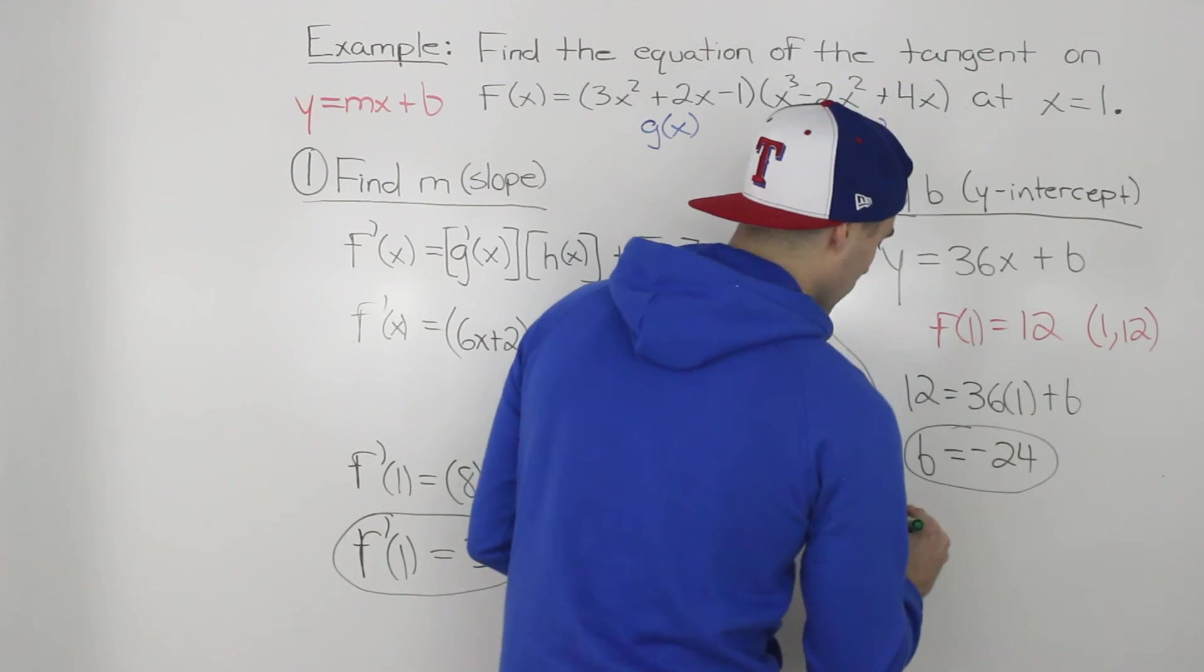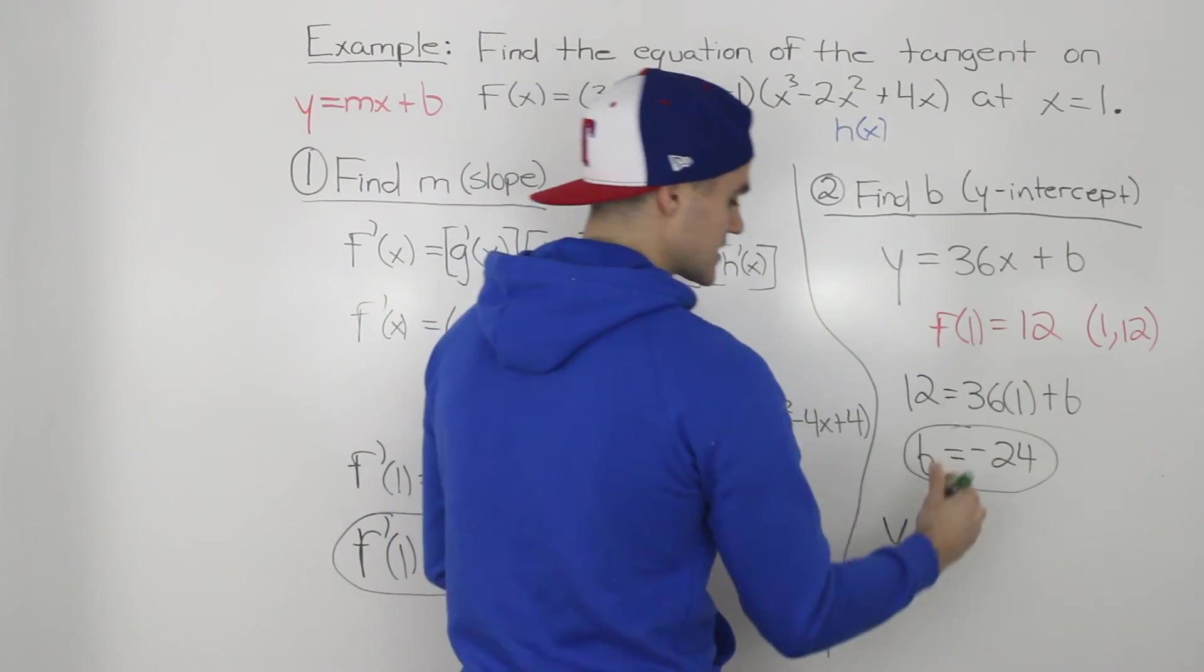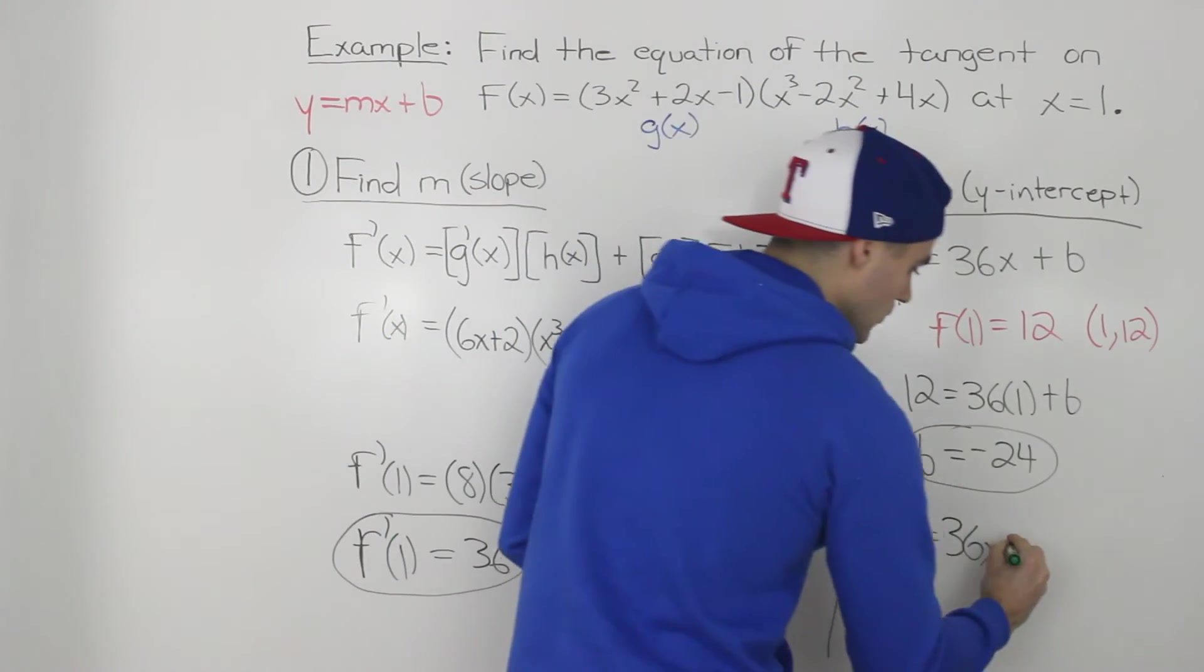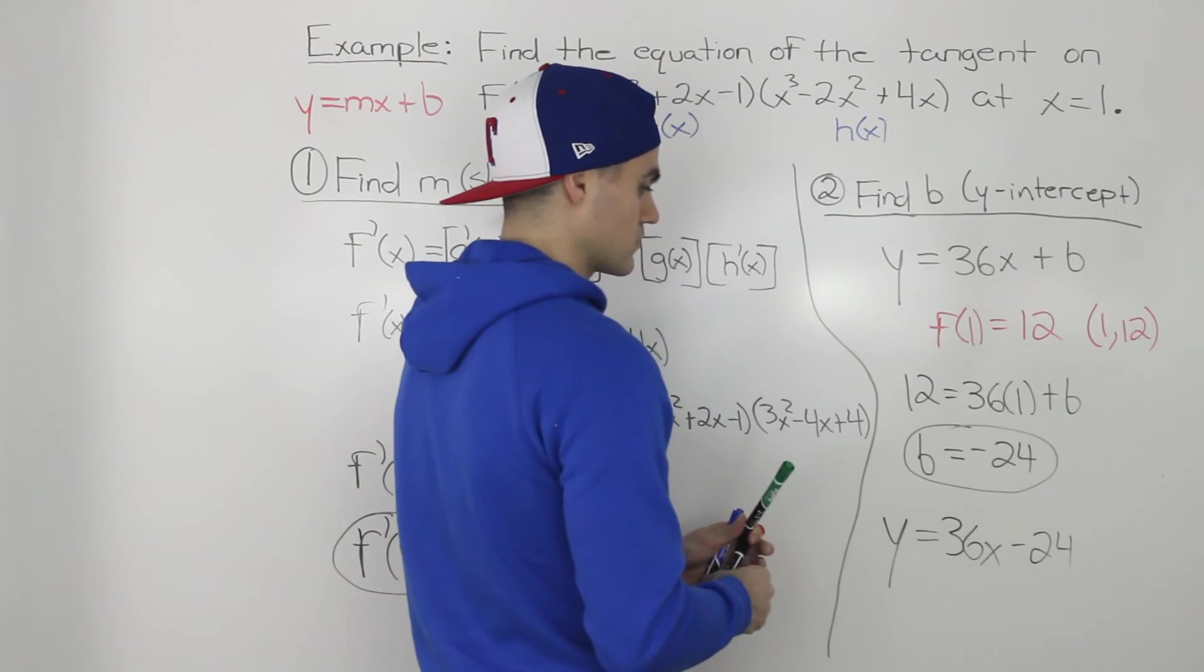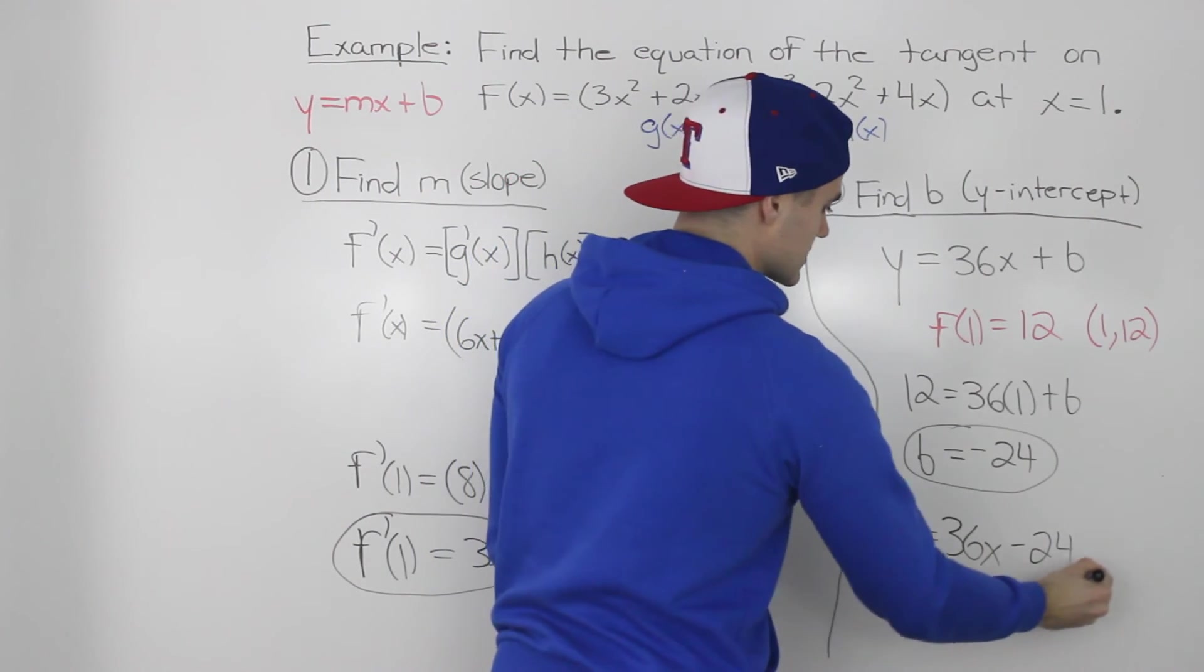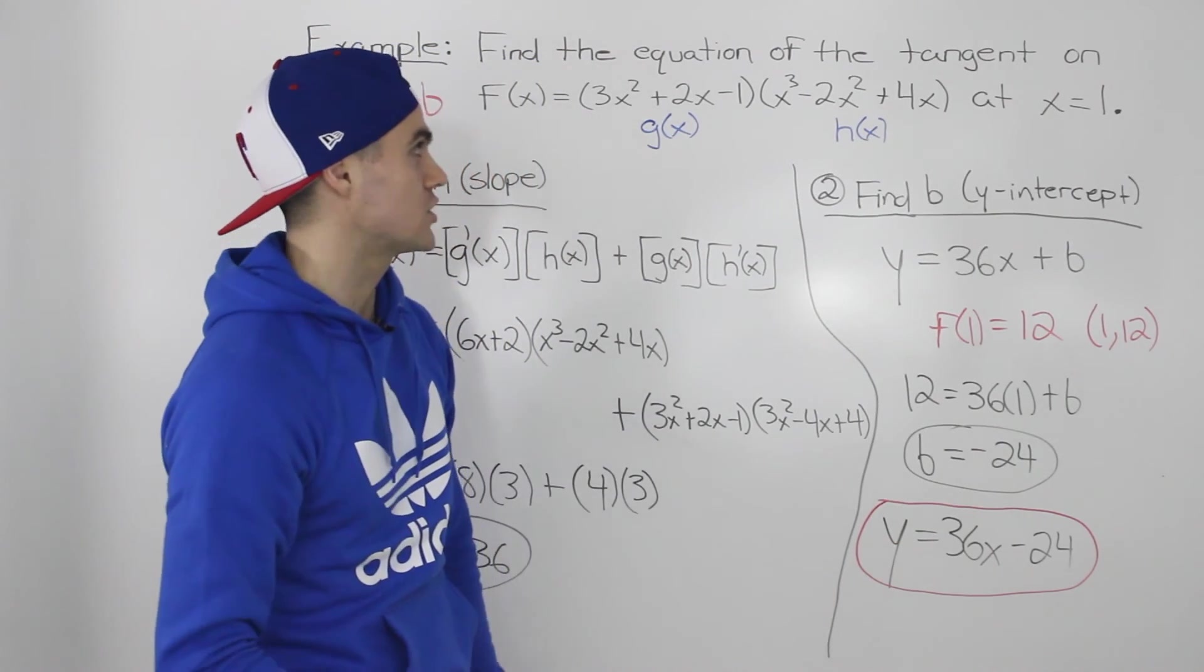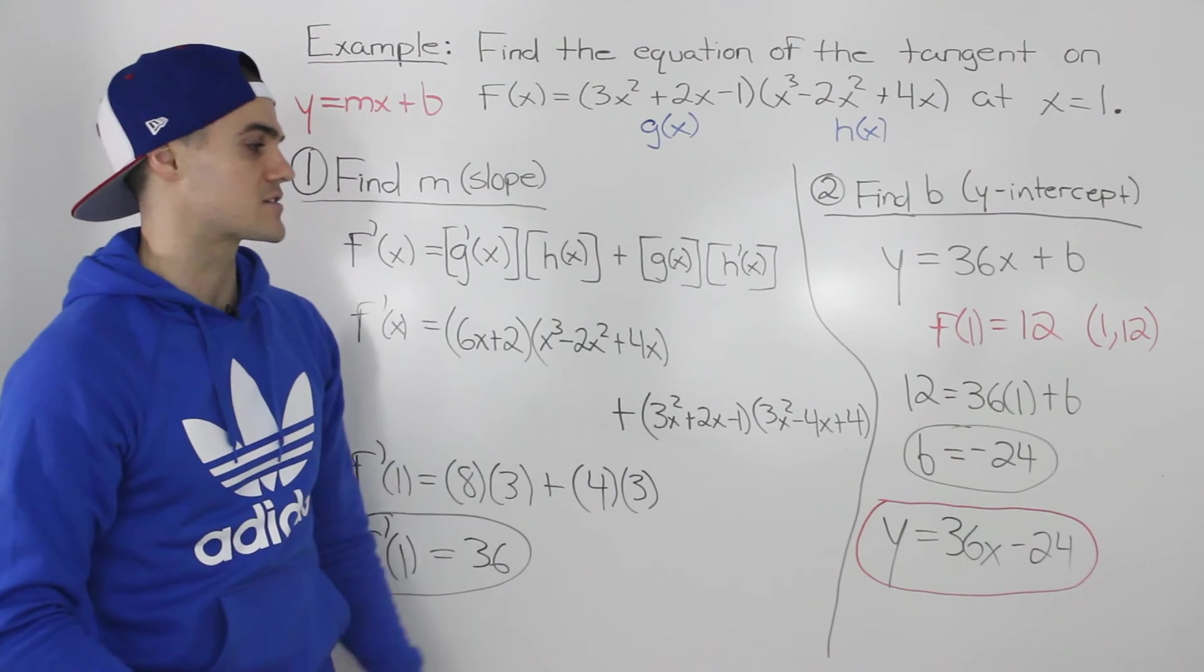Therefore, our final equation is y equals 36x, that slope that we found in step 1, minus 24, the b value that we found in step 2. So our final answer is y equals 36x minus 24. That's the equation of the tangent on this function at an x value of 1.